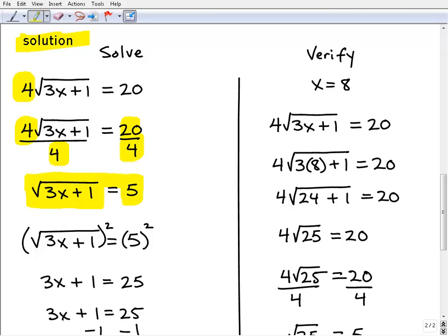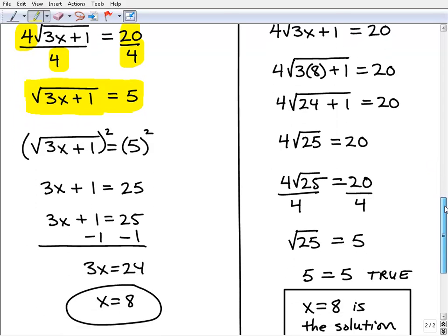So the square root of 3x plus 1 equals 5. At this point, we're ready to take the next step, and that is to square both sides. Why do we want to do that? Well, when you square a square root, you get rid of the square root symbol—you get rid of the radical. So here I have the square root of 3x plus 1. If I square it, that square root symbol goes away.